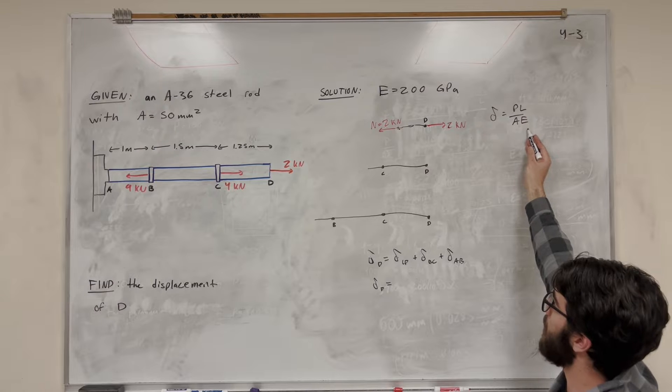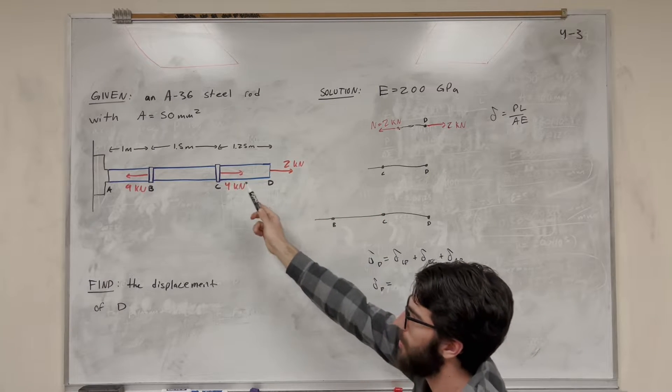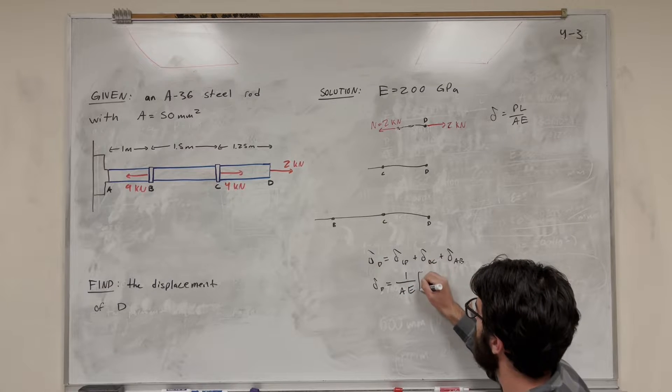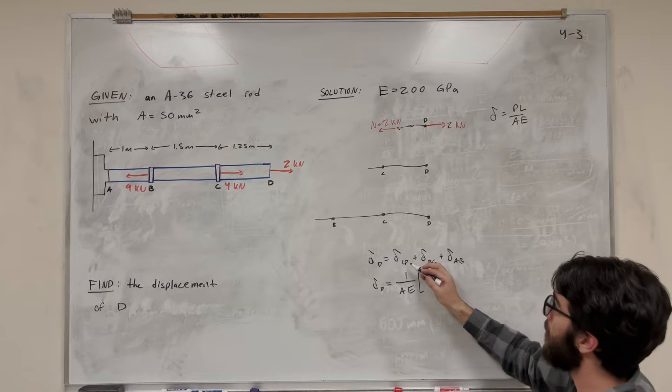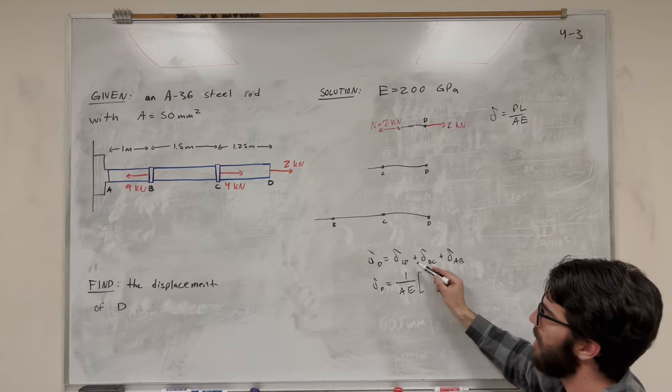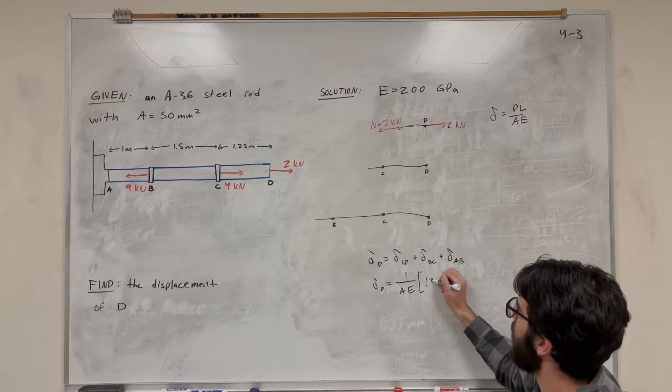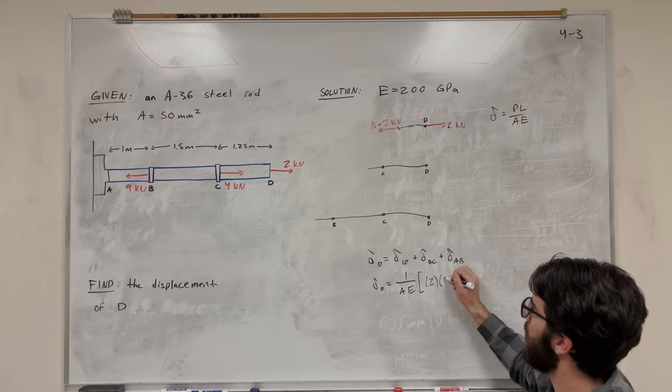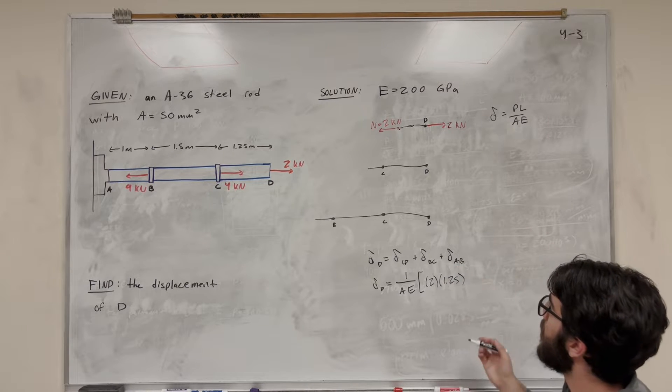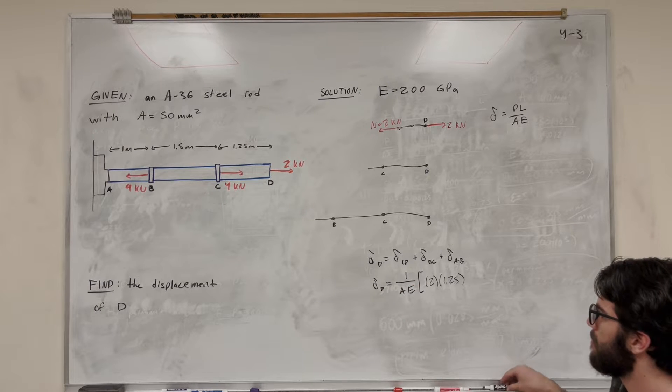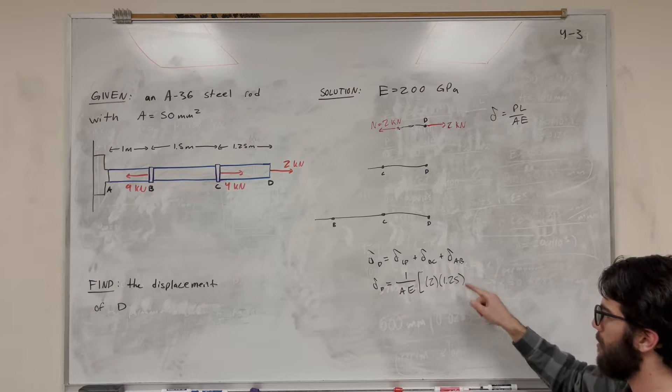It's going to have the same area and the same modulus of elasticity for each one of these points, because they all have the same area. So we can go ahead and factor that out, 1 over AE. And this is what we're looking at, PL for CD. So we just said the force, the normal force is 2. So we can just go ahead and plug in a 2 there. And then the length of it is 1.25 meters. So we went ahead and found out what the displacement for CD is. So now we need to find out what BC is and what AB is.